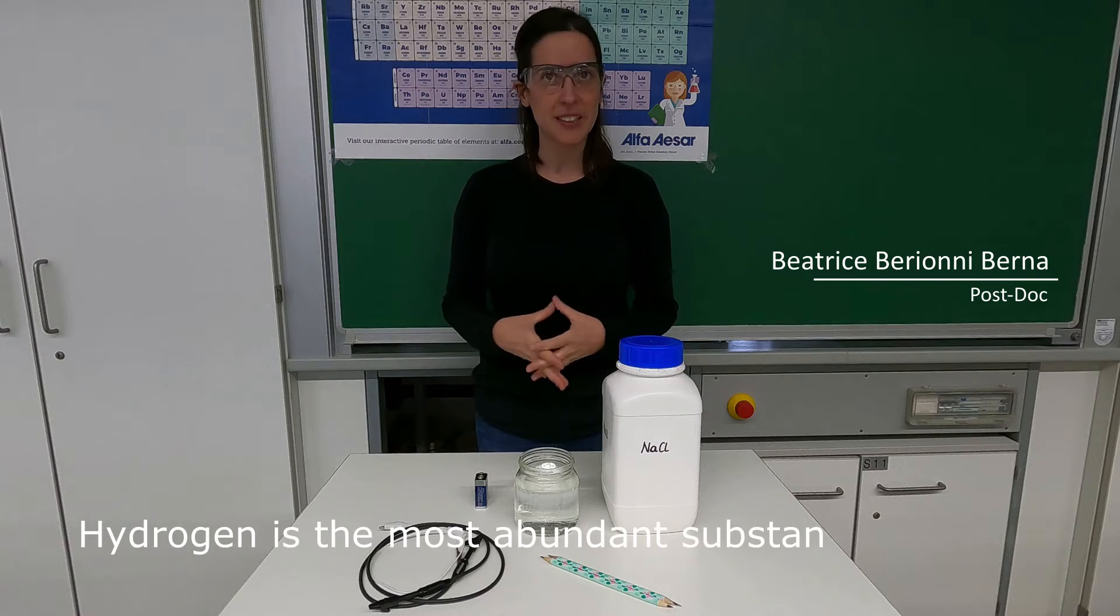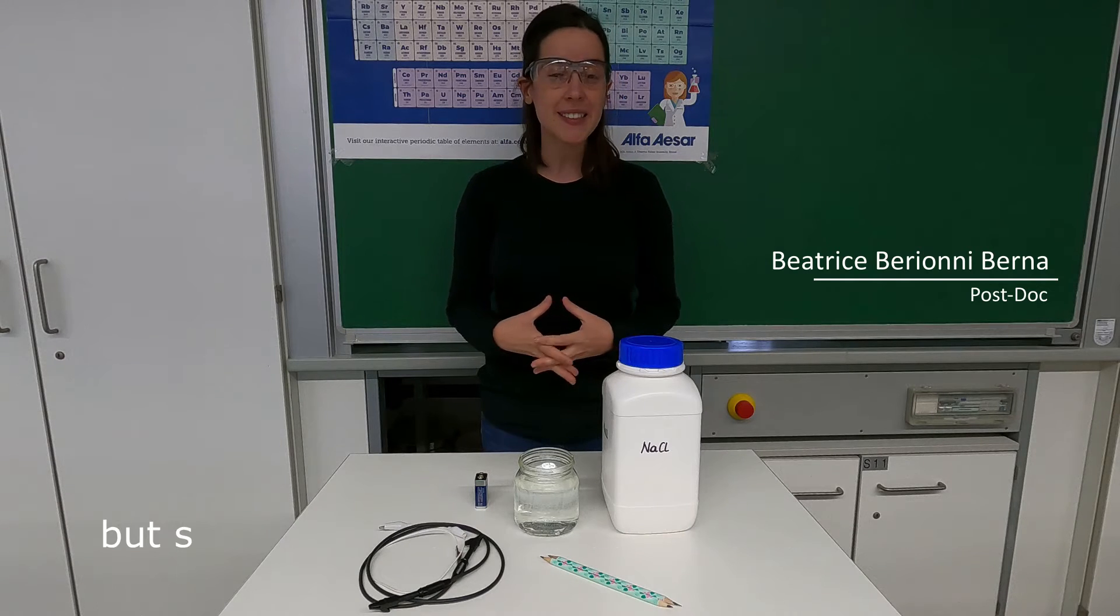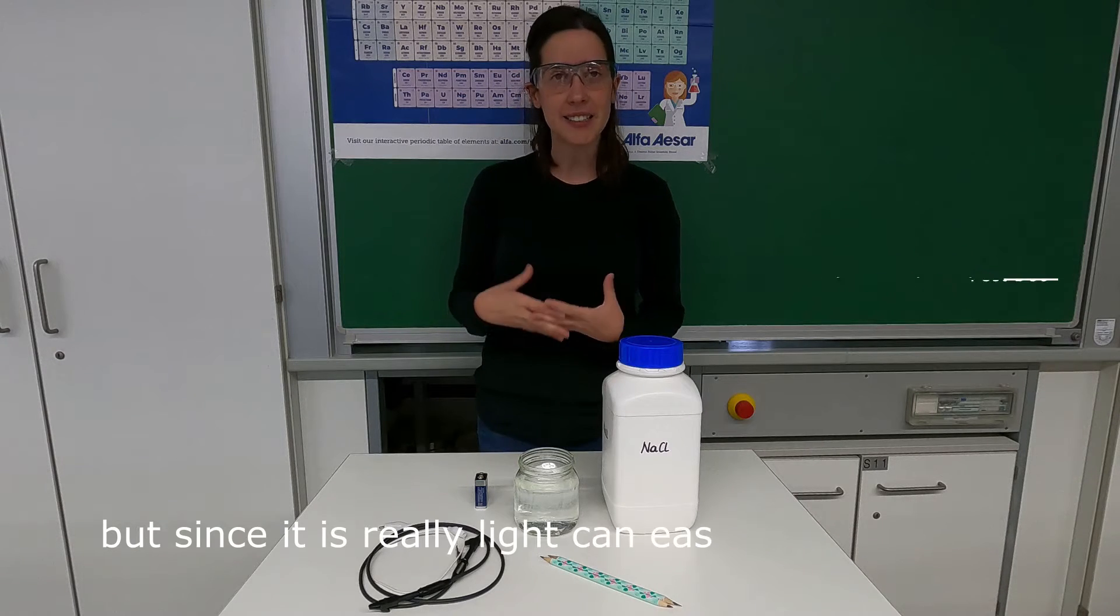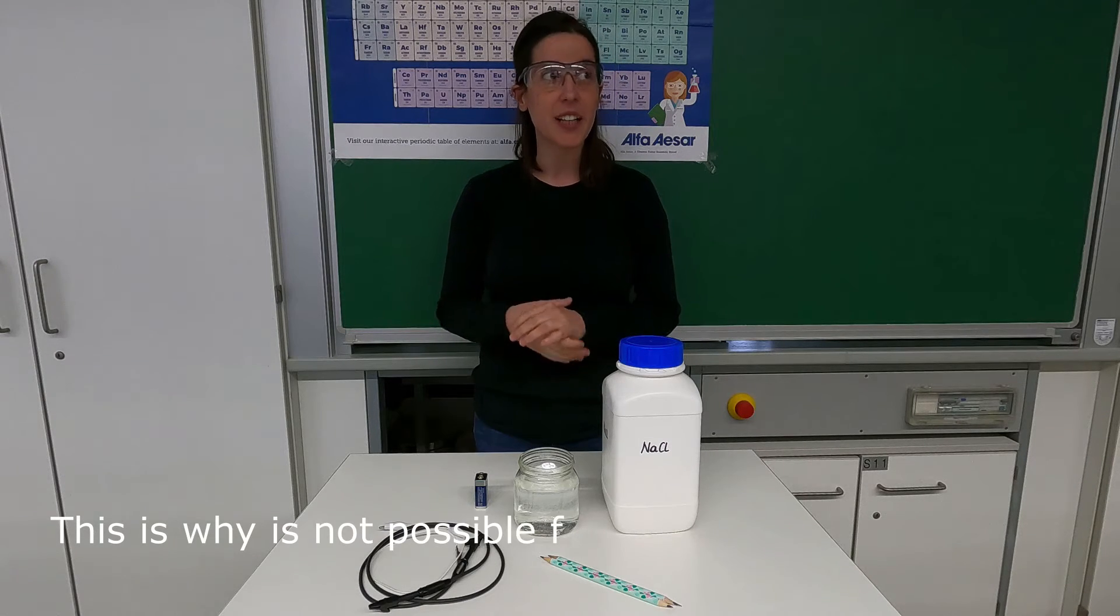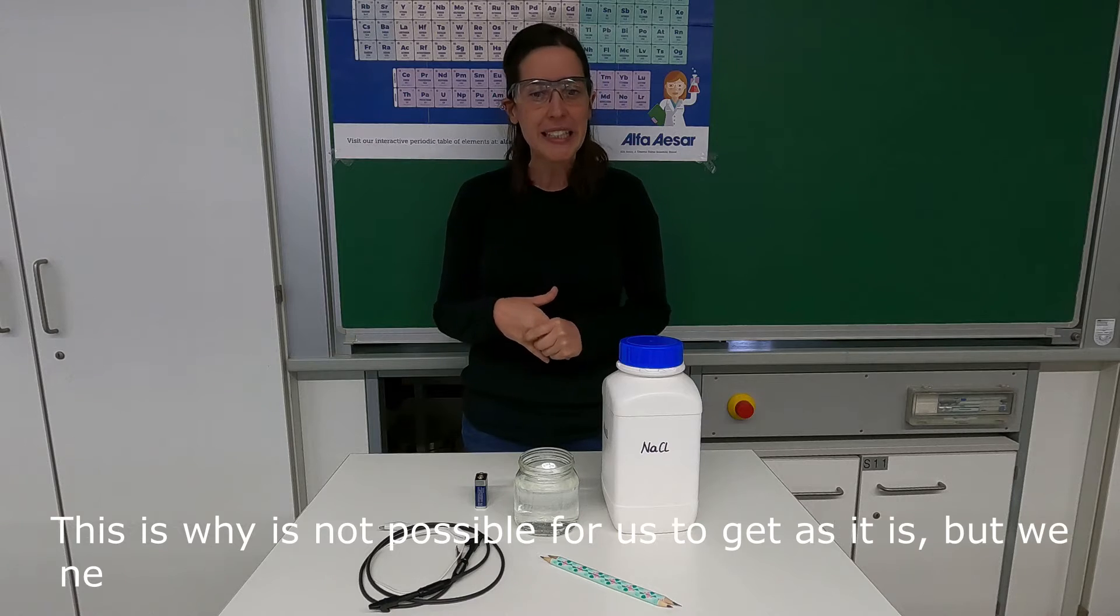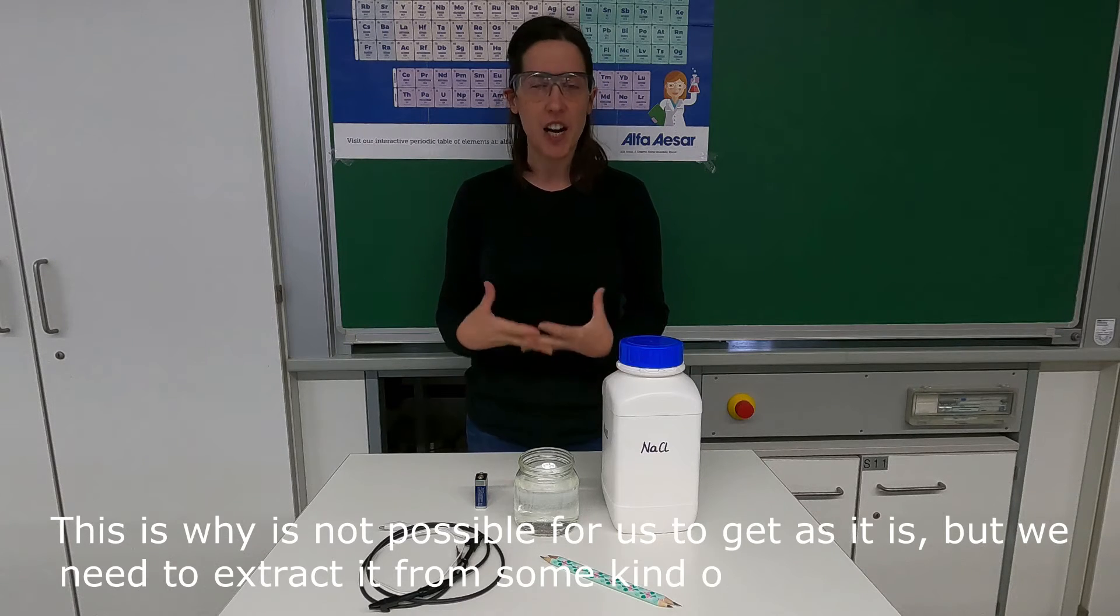Hydrogen is the most abundant substance in the whole universe. But since it is very light, it can easily escape to the highest level of our atmosphere. This is why it is not possible for us to get hydrogen as it is, but we need to extract it from some kind of hydrogen source.